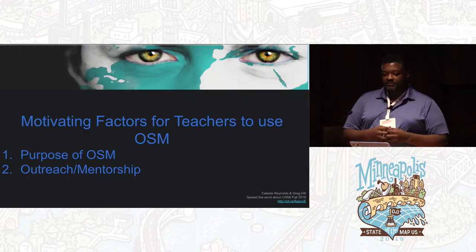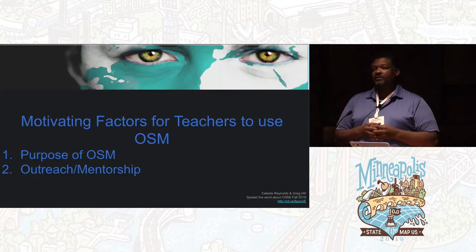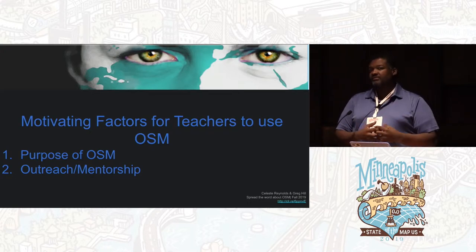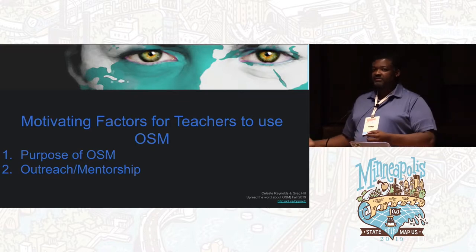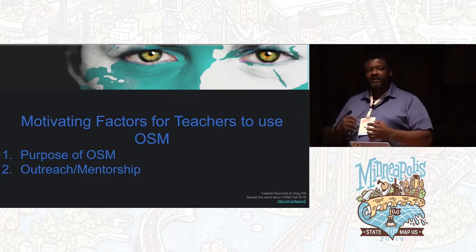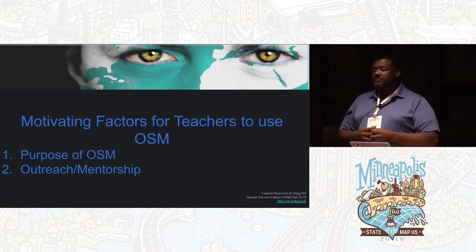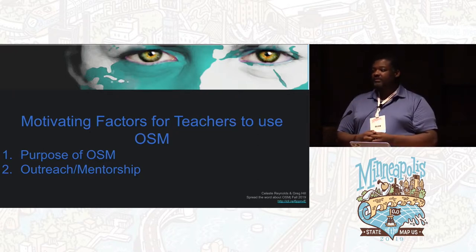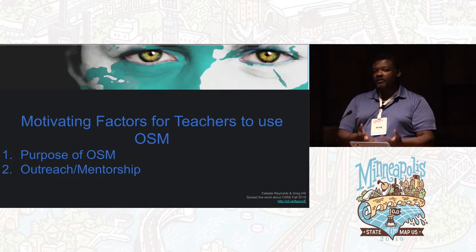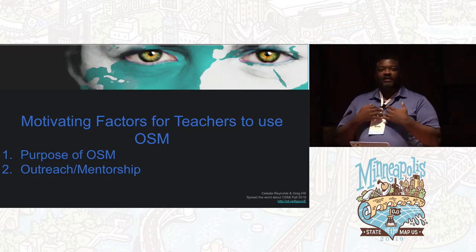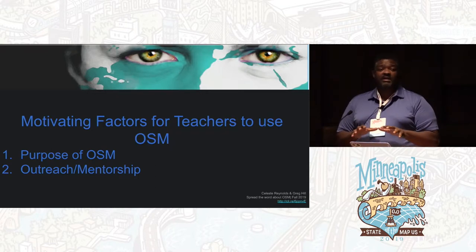The third component is mentorship — a super key factor because teachers need support. They need us as drum majors for OpenStreetMaps to sell them on this: yes, you can use this, and this is the wave of the future. Students can see that geography isn't just their granddaddy's geography with black outline master maps — this is actually electronic. This is also a great way to leverage STEM money, because a lot of money is leaving social studies. This is a great way to write a STEM grant or ask your principal for some of those STEM dollars.